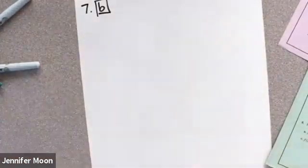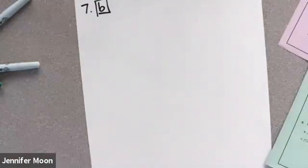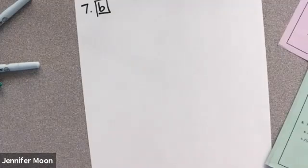Okay, 7b says use the given conditions to write an equation for the line in point-slope form and in slope-intercept form. So I'm writing the same two formulas we did like a couple problems ago.